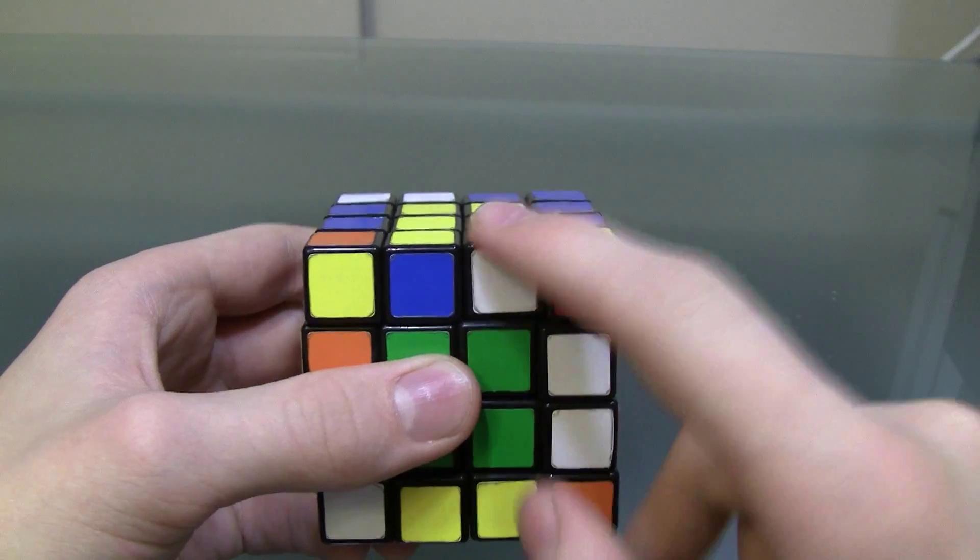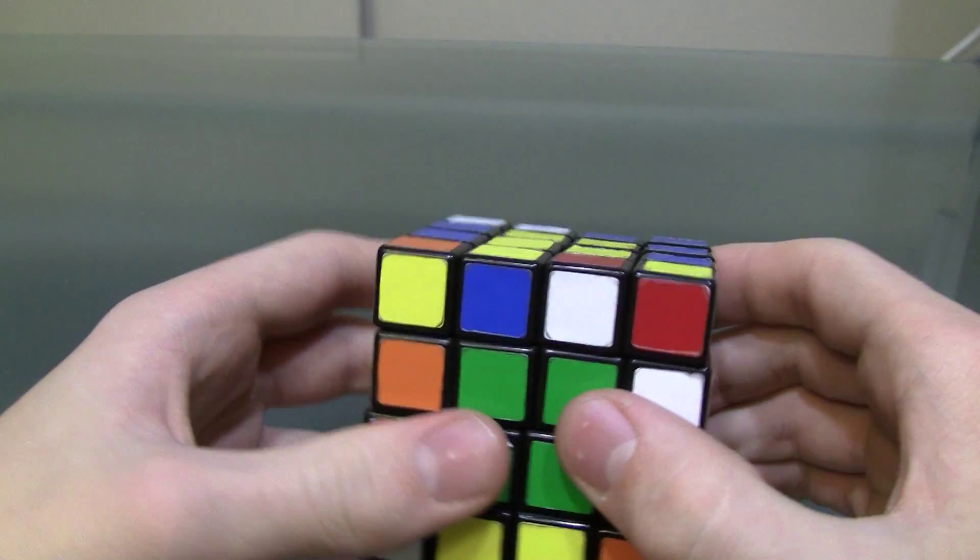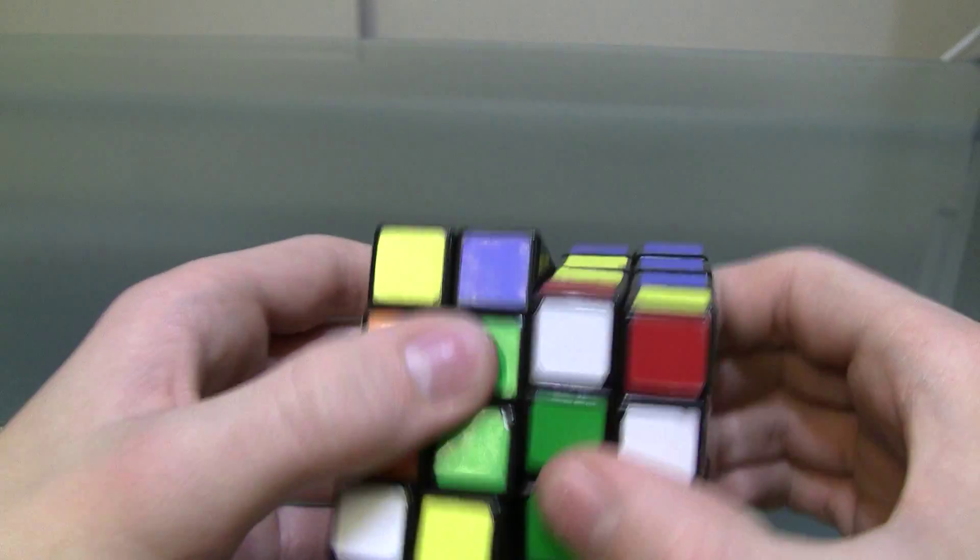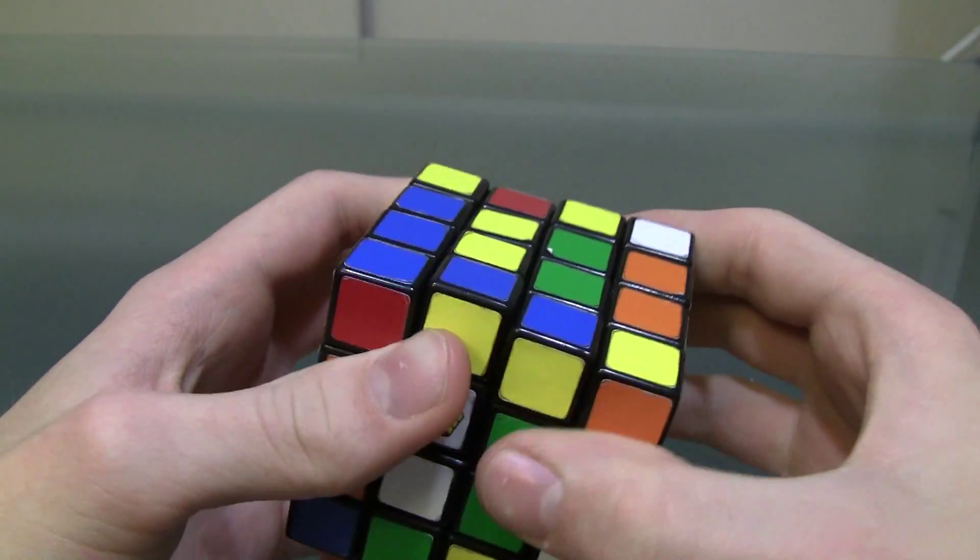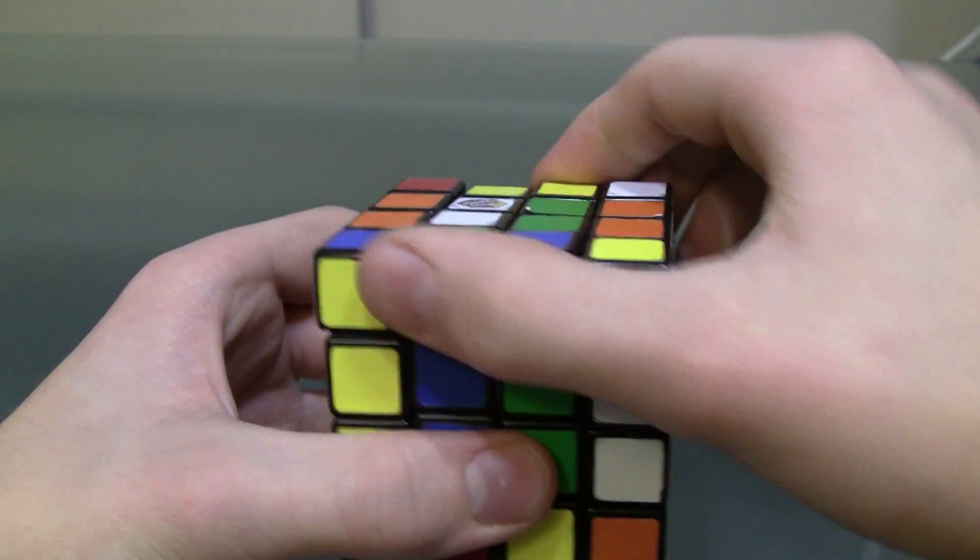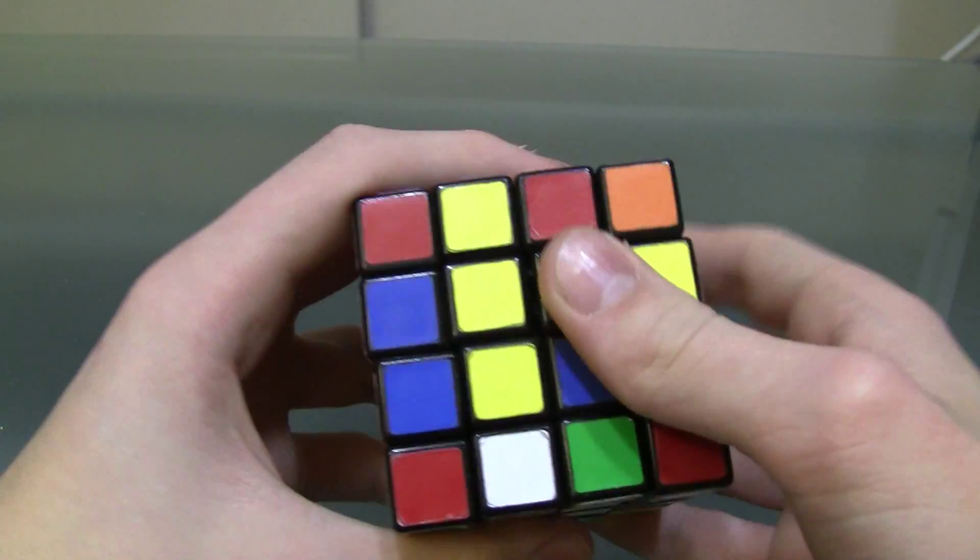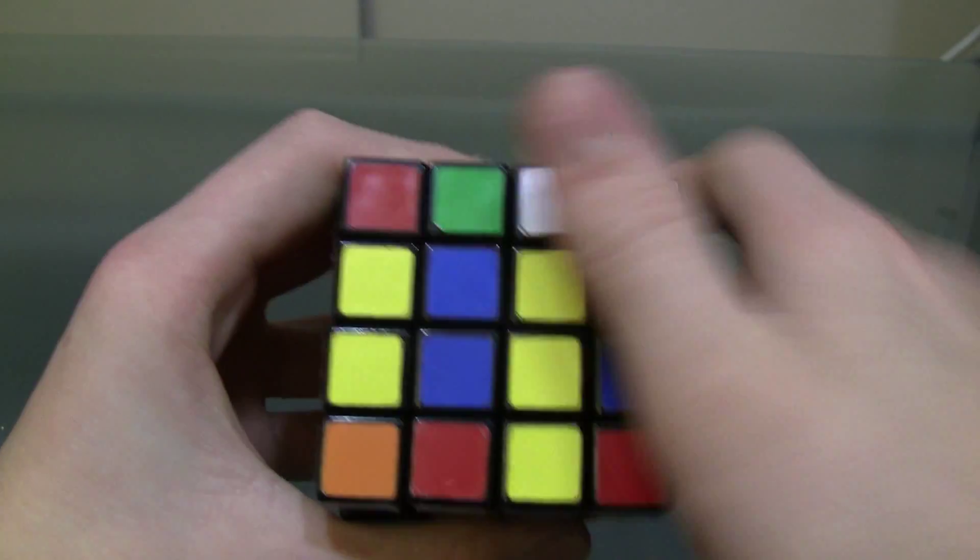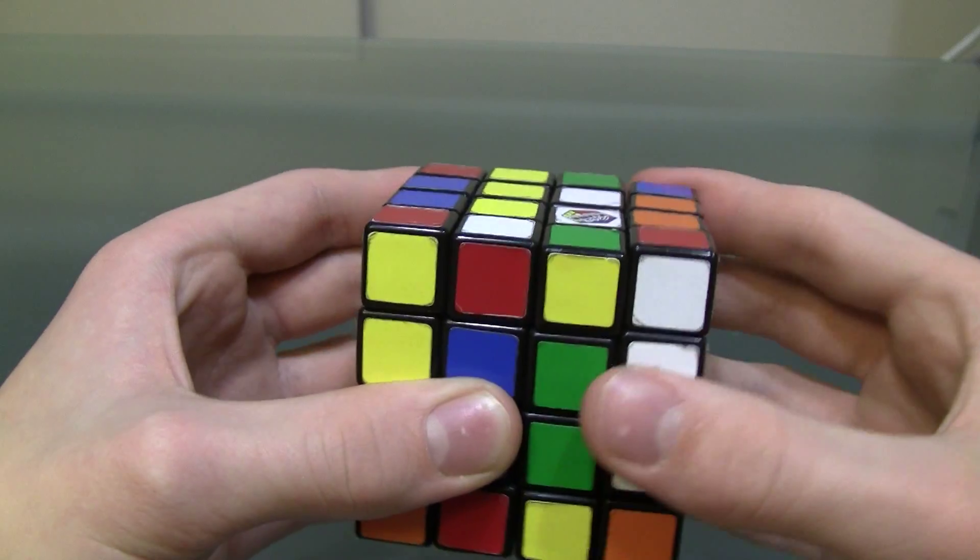So one of the unmatched pairs is facing you, on the top layer, one of the unmatched pairs is facing away from you, and the algorithm is inner LI, U2, inner LI, U2, F2, inner LI, F2, inner R, U2, inner LI, U2, inner L2.